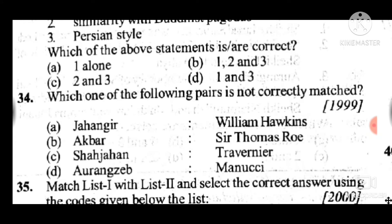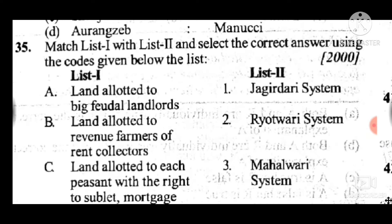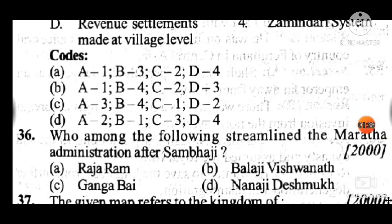Question 34: Which one of the following pairs is not correctly matched? Answer to question 34 is B: Akbar – Sir Thomas Roe is incorrectly matched; the rest are correctly matched. Question 35: Match list 2 with list 1. Answer to question 35 is B: A relates to 1, B relates to 4, C relates to 2, and D relates to 3. Question 36: Who among the following streamlined the Maratha administration after Sambhaji? Answer to question 36 is B: Balaji Vishwanath.